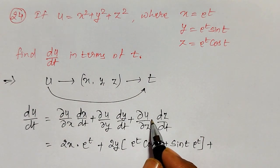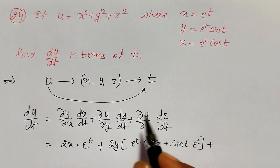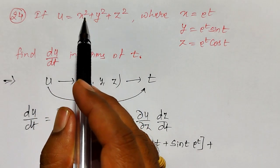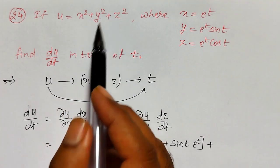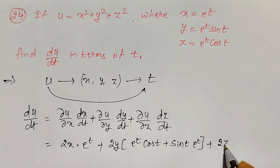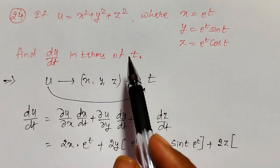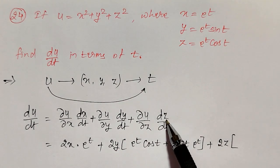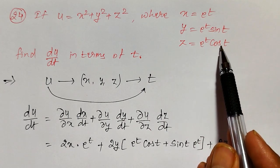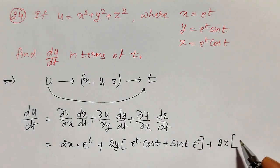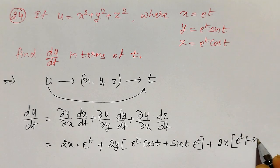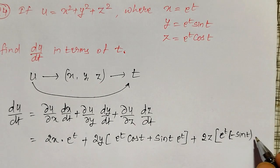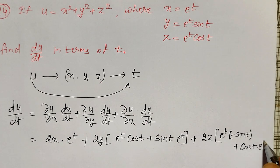Next, ∂u/∂z: partial derivative of u with respect to z — x and y are constant, so only z² differentiates to 2z. Multiply by dz/dt. Since z = e^t · cos(t), using the product rule: dz/dt = e^t · (−sin t) + cos(t) · e^t.